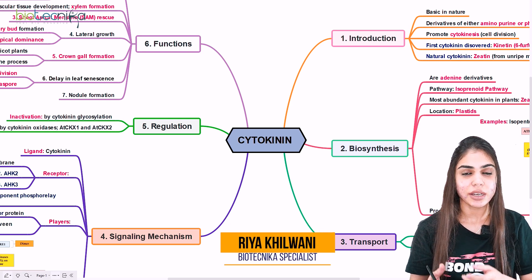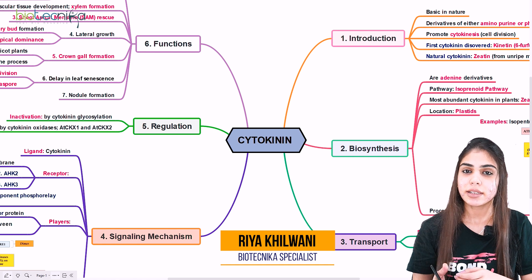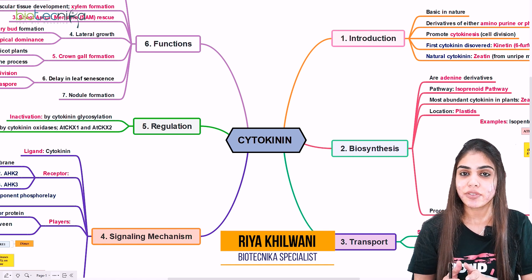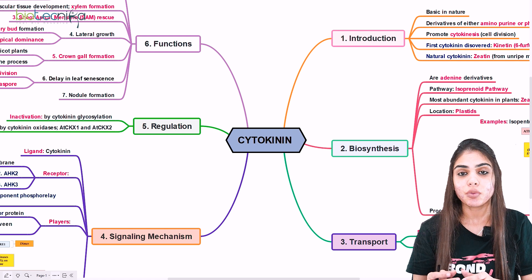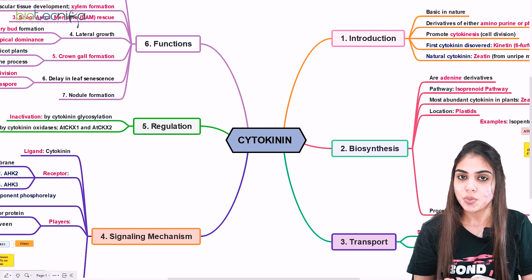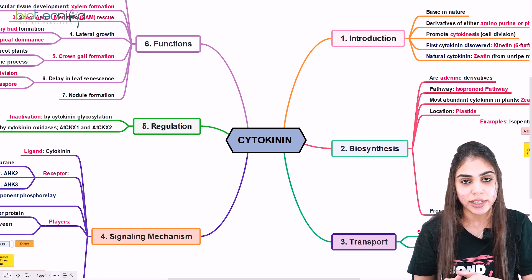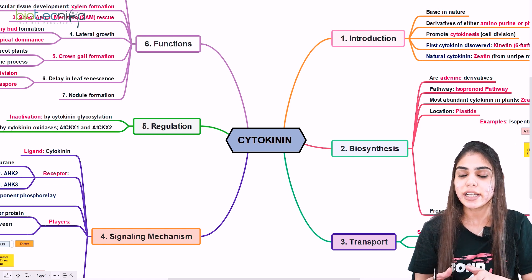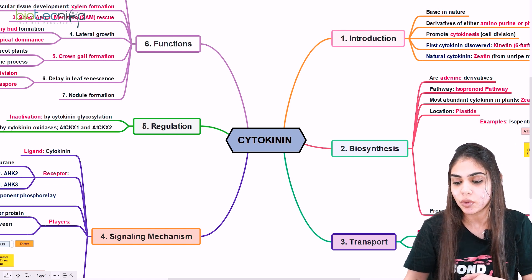A phytohormone involved in cell division in the plant cell is cytokinin. Today we are going to learn about its biosynthetic pathway, transport, regulation, functional profile, as well as the signaling cascade. Let's move on to the topic and understand all these details about cytokinin phytohormone.